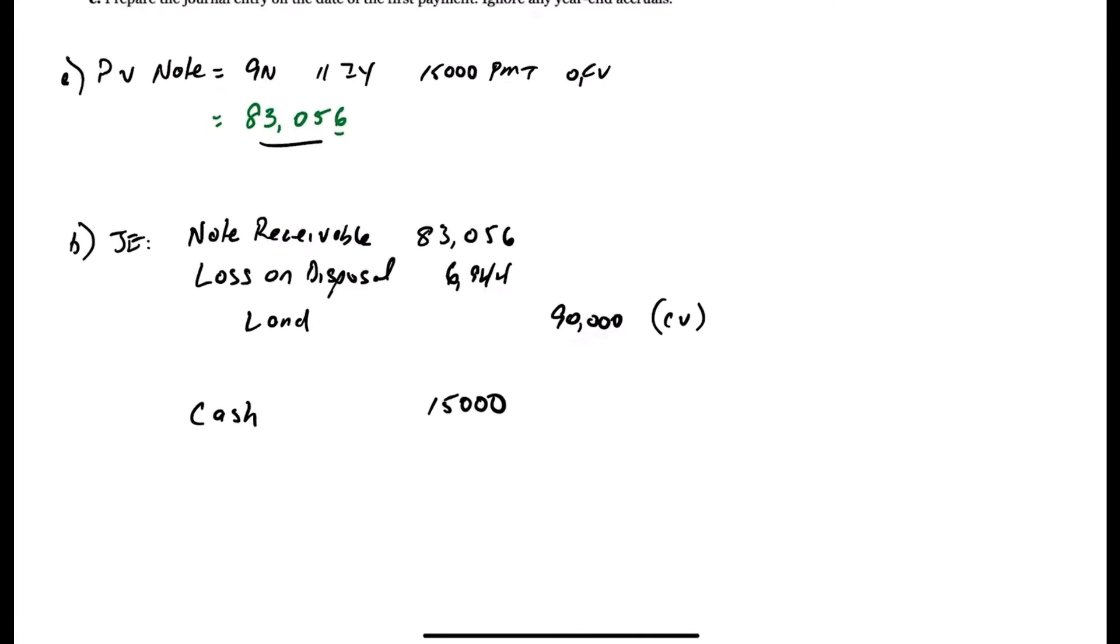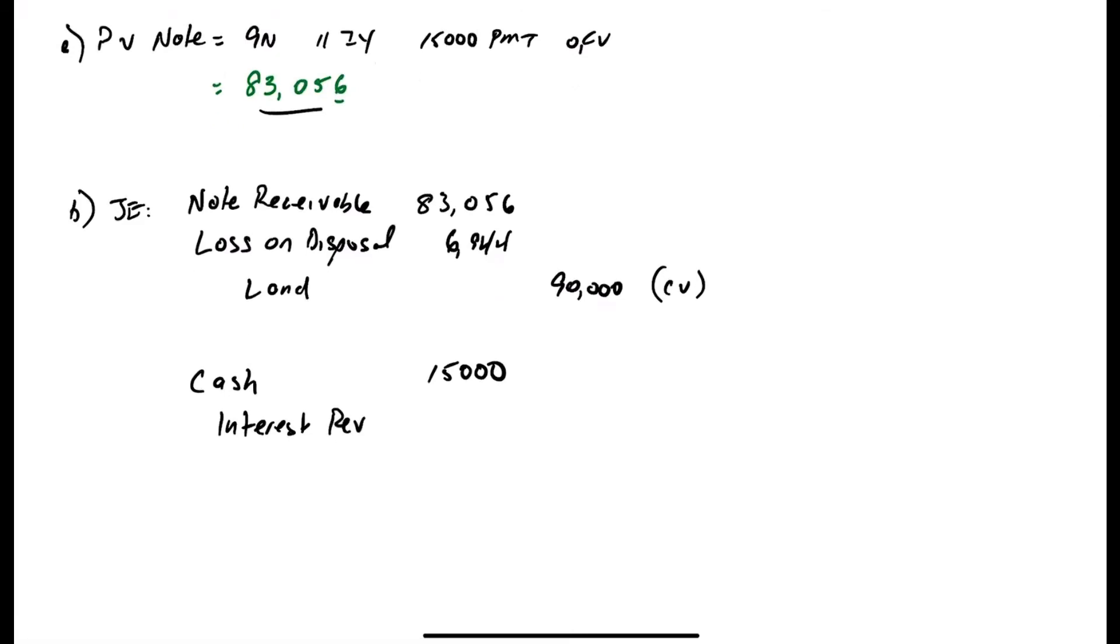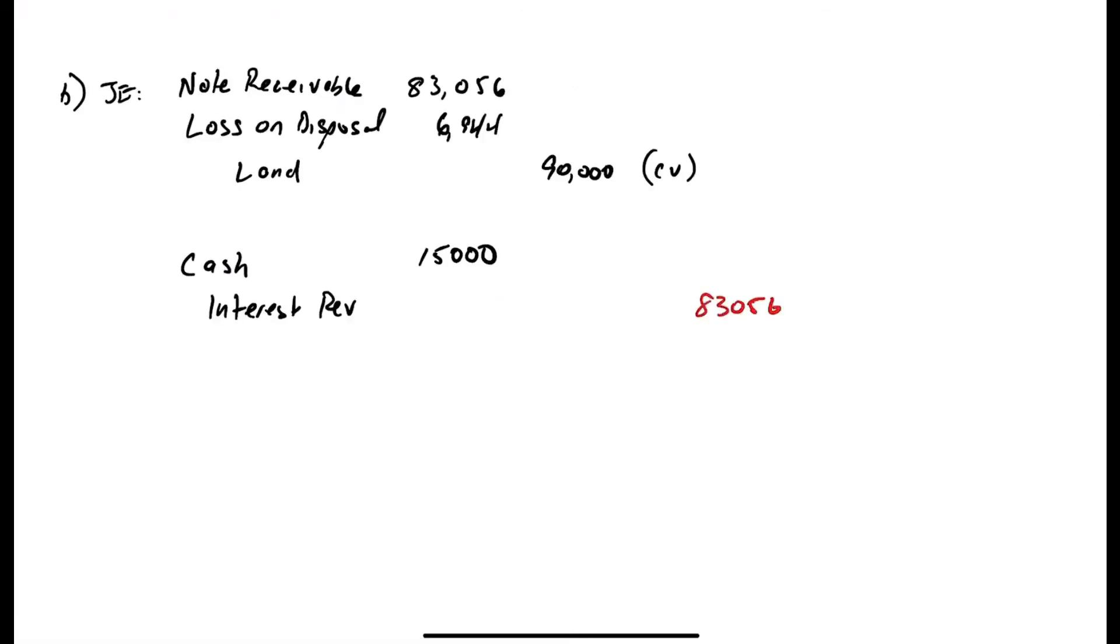So you're going to have interest revenue, and that interest would be $83,056, which is the balance on the note, times 11%. So that is interest revenue of $9,136. And your journal entry doesn't balance, so you need something else to make a balance of $5,864. And this is a credit to the note receivable.